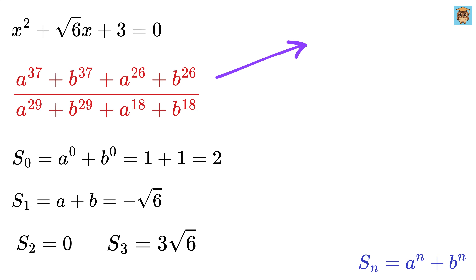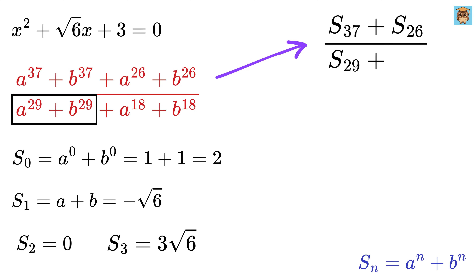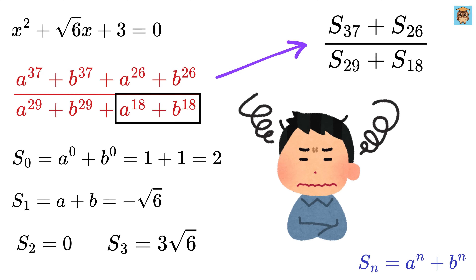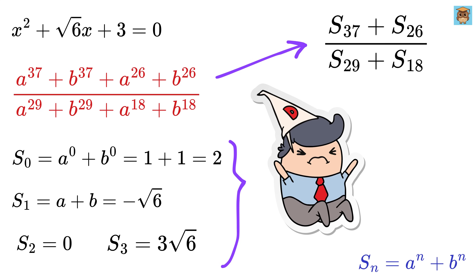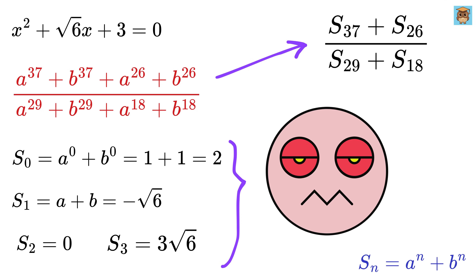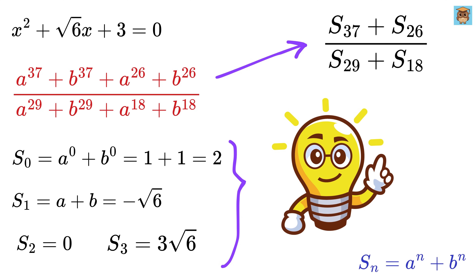The value of our ratio will be s_37 plus s_26 divided by s_29 plus s_18. Again, we are in trouble, as I will not be calculating s_37 manually like this, because that's clearly not practical and it will be super tedious. Should we abandon this question because we are stuck here? Or is there still a smarter way to tackle this using any other method?